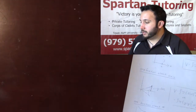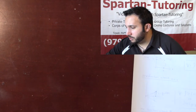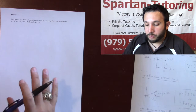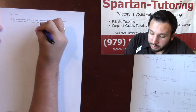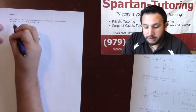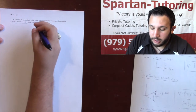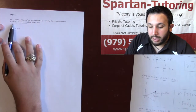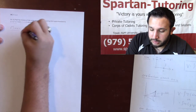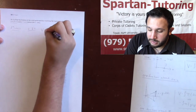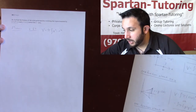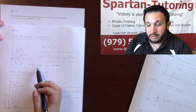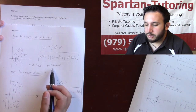Now let's throw two functions in. For number three: find the volume of the solid generated by revolving the region bounded by x squared plus two and x plus four about the x-axis. I have two functions about the x-axis — function equals the axis, so I'm using disk-washer. With two functions, volume equals pi times the integral of big R squared minus little r squared.